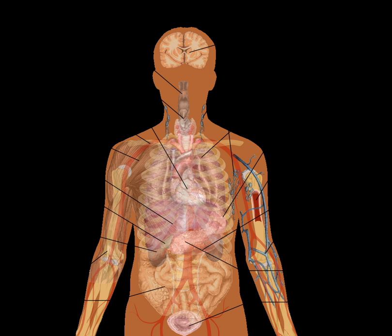In biology, tissue is a cellular organizational level between cells and complete organs. A tissue is an ensemble of similar cells and their extracellular matrix from the same origin that together carry out a specific function. Organs are then formed by the functional grouping together of multiple tissues. The study of human and animal tissues is known as histology or, in connection with disease, histopathology.